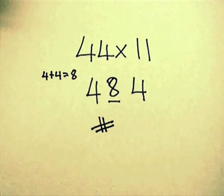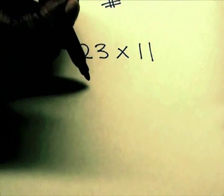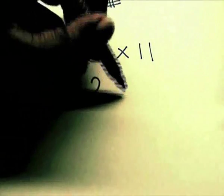Surprise? Easy right? Now let's look at a few more examples. Let's do 23 multiply with 11. Create an empty space between the 2 and 3.